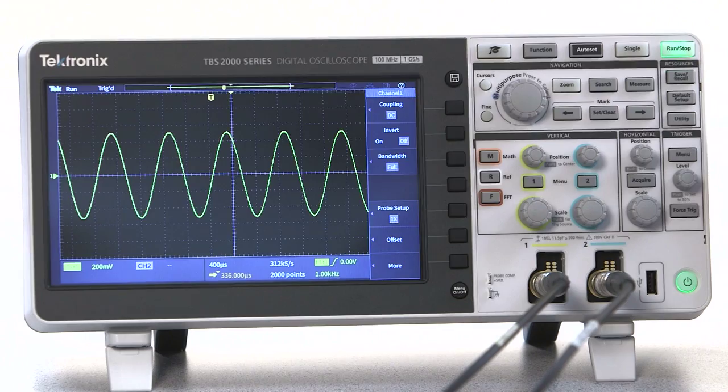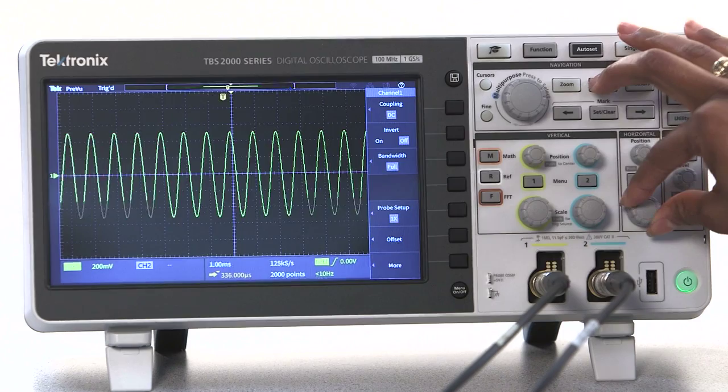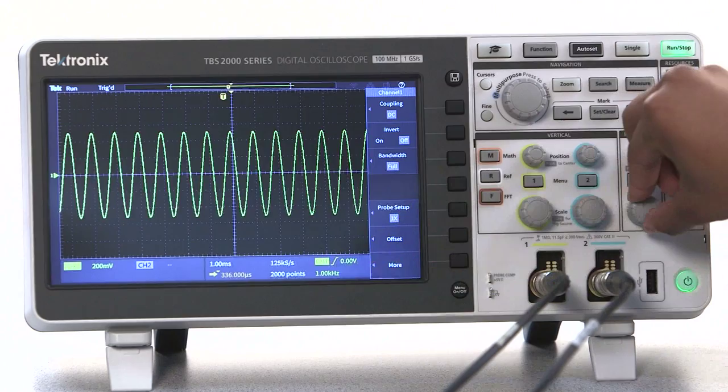On most digital oscilloscopes, as you change the time scale, the sampling rate also changes to make the best use of memory, as you can see here.